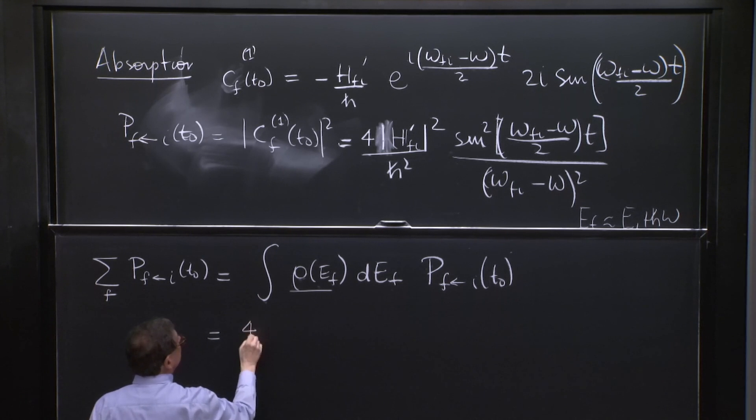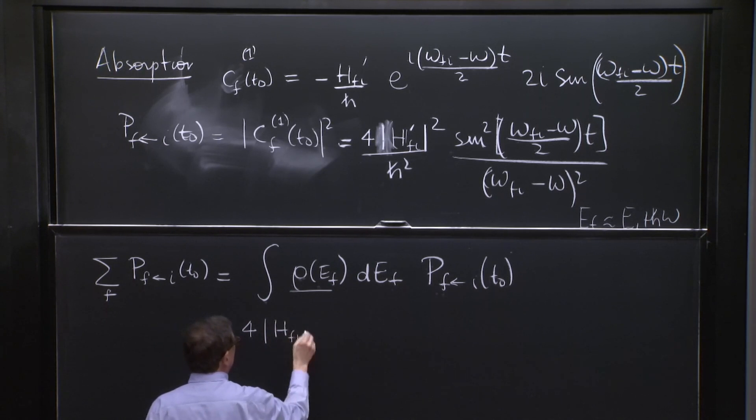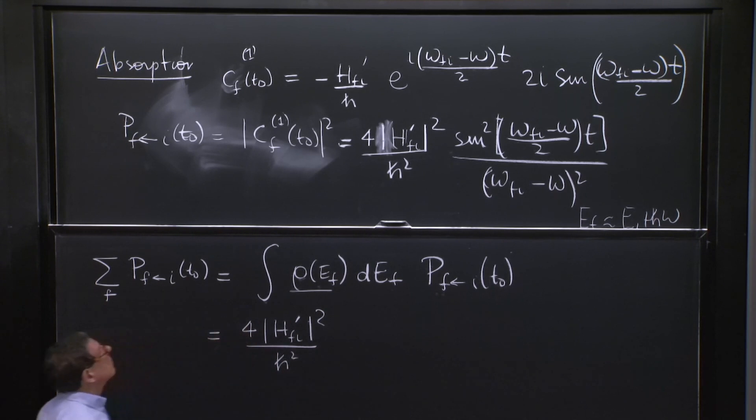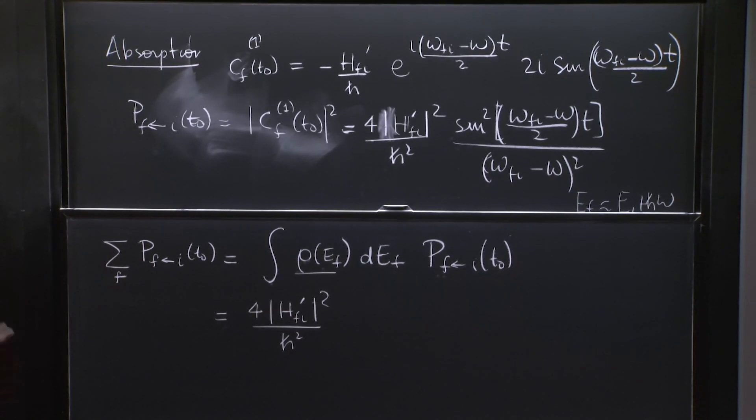So what are we going to have? I'll write it here. 4 from the matrix element, from this thing, 4, hfi prime squared over h squared.